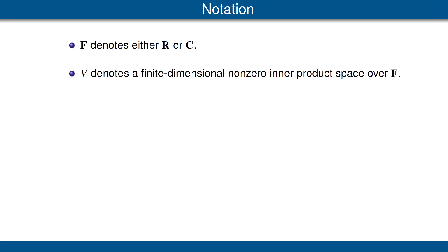Here are the standard assumptions we use about notation in this section. F denotes either the scalar field R of real numbers or the scalar field C of complex numbers. V will denote a finite dimensional non-zero inner product space over F.